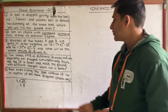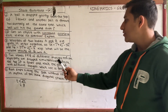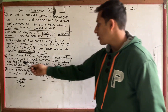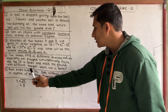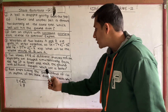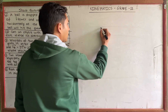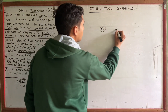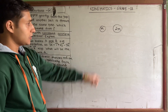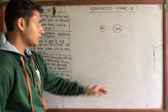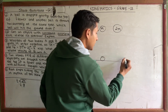Question number four: Two stones P and Q of different masses M and 2M respectively are dropped simultaneously from the top of a tower and reach the ground with different energies. Which one reaches the ground faster? Stone P has mass M and stone Q has mass 2M.